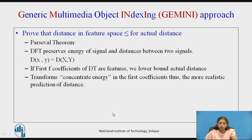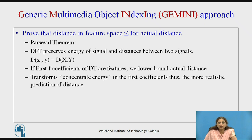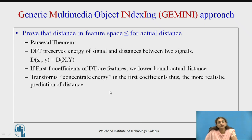The third step is to prove that the feature distance in feature space is less than the actual distance. For the Discrete Fourier Transform, Parseval's theorem states that the energy of a signal and the distances between two signals are preserved — meaning the distance between two signals equals the distance between their features. The first f coefficients of the DFT are used, which lower bound the actual distance.